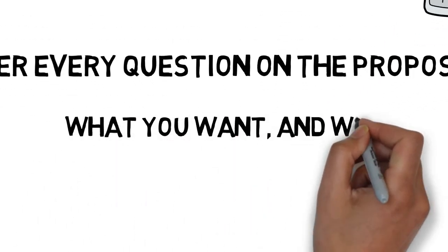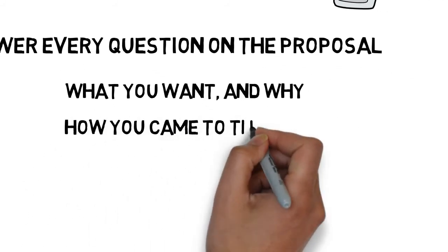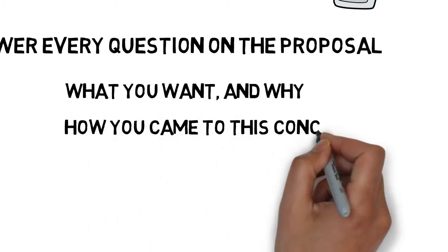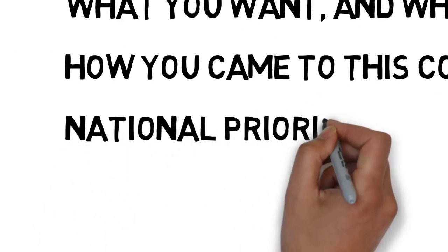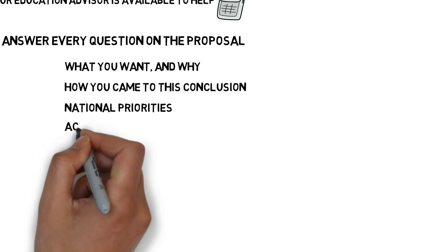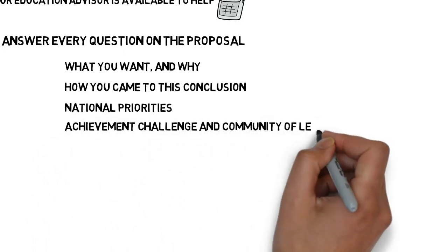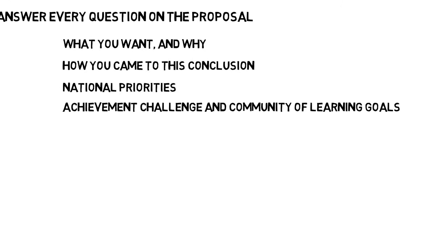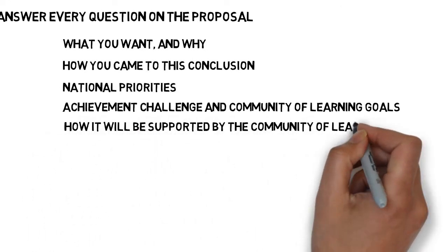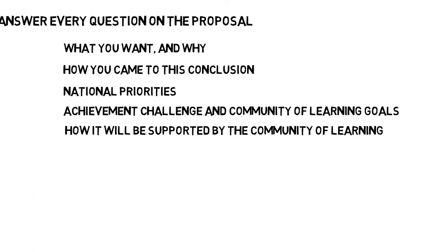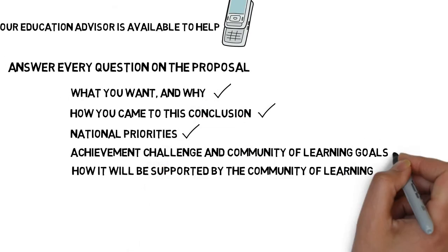Your proposal should cover: the inquiry process you used for arriving at your PLD request and who was involved; what national priority area or areas each PLD request relates to; how the PLD relates to your Achievement Challenge and kā hui āko goals; and finally, how it will be supported by the kā hui āko, who will lead it, and how other people within the kā hui āko will contribute.